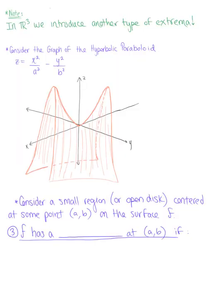To help us introduce that new type of extrema, we want to consider the graph of the hyperbolic paraboloid. In particular here, I want us to focus on the origin. So let's let (a,b) be equal to the ordered pair (0,0) in R².